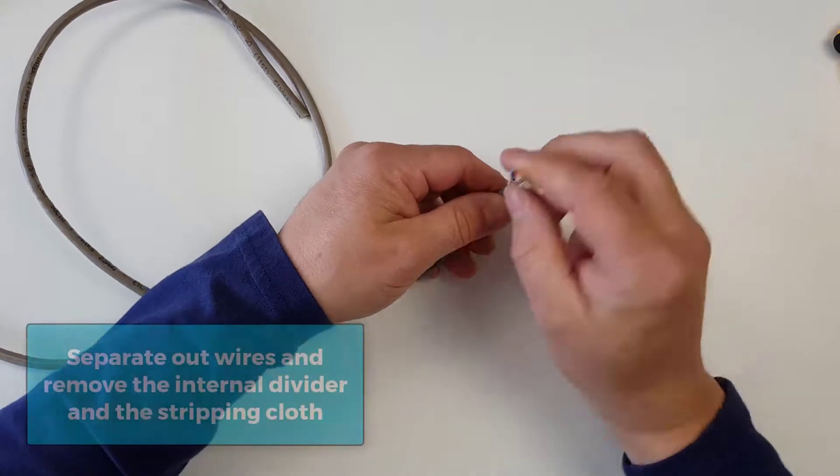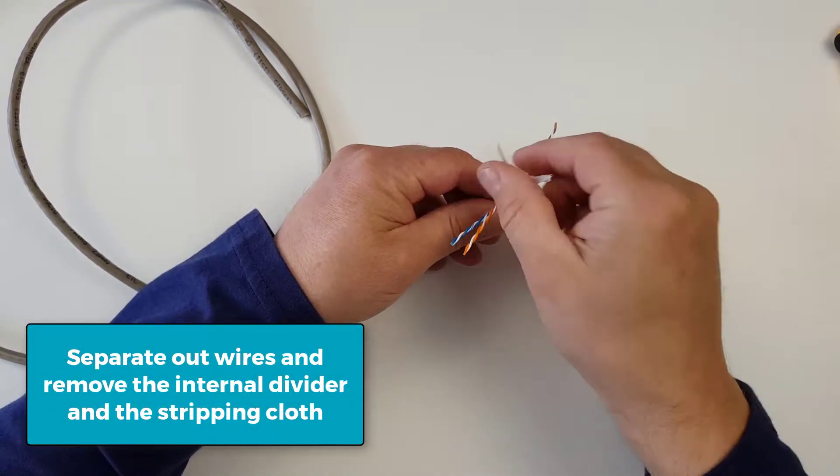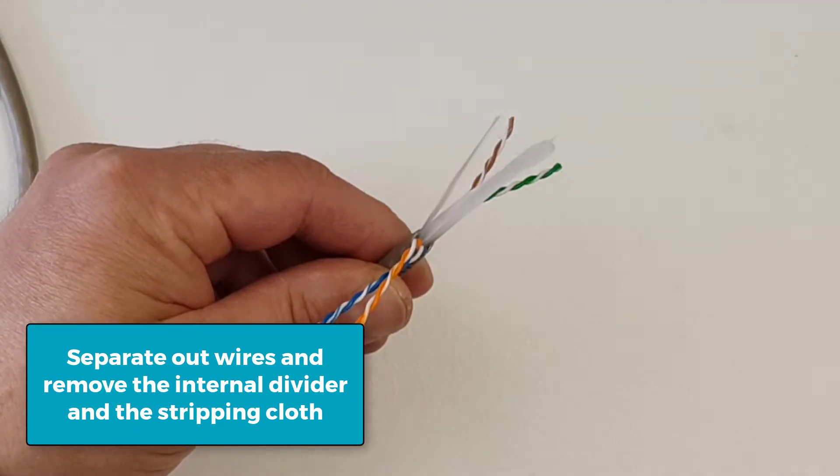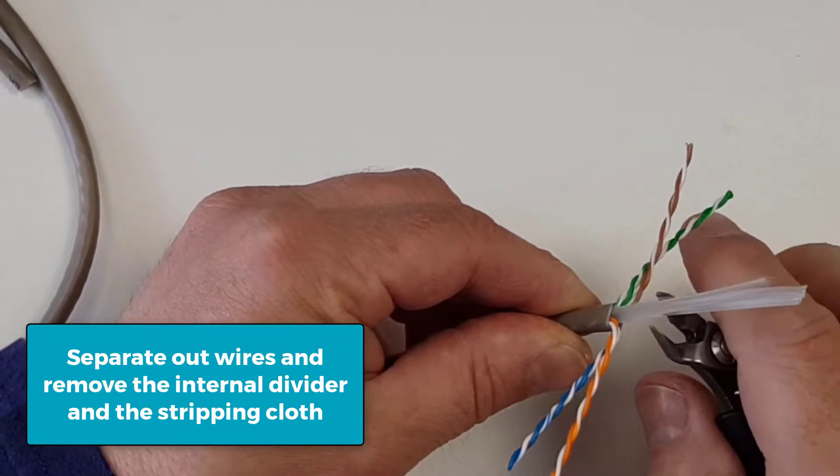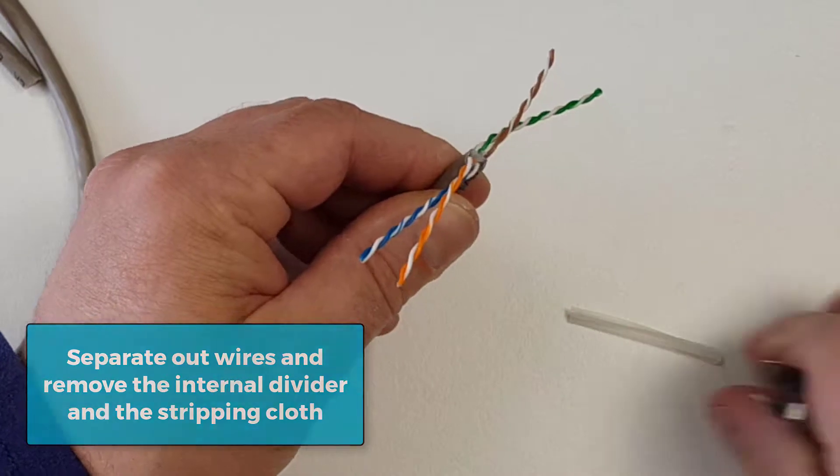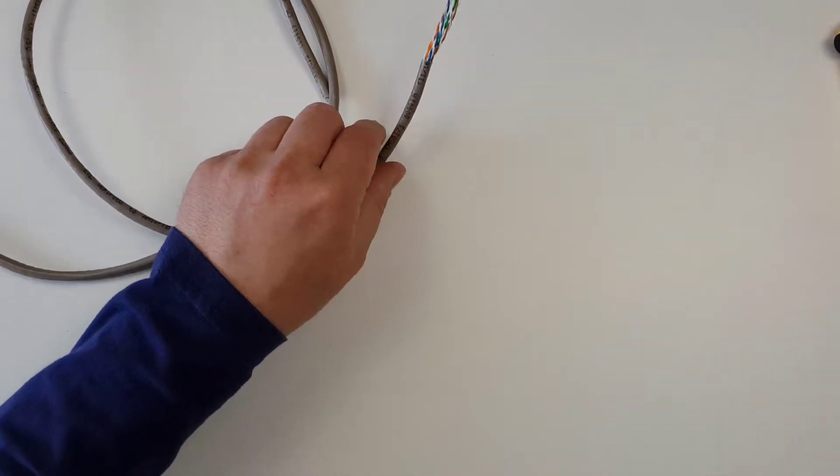Right, so after I have done that, I will just separate those wires out. That exposes the central spacing piece there and the cutting cloth. I am going to use our cutters to cut those out. I am ready to put it inside the cable guide.